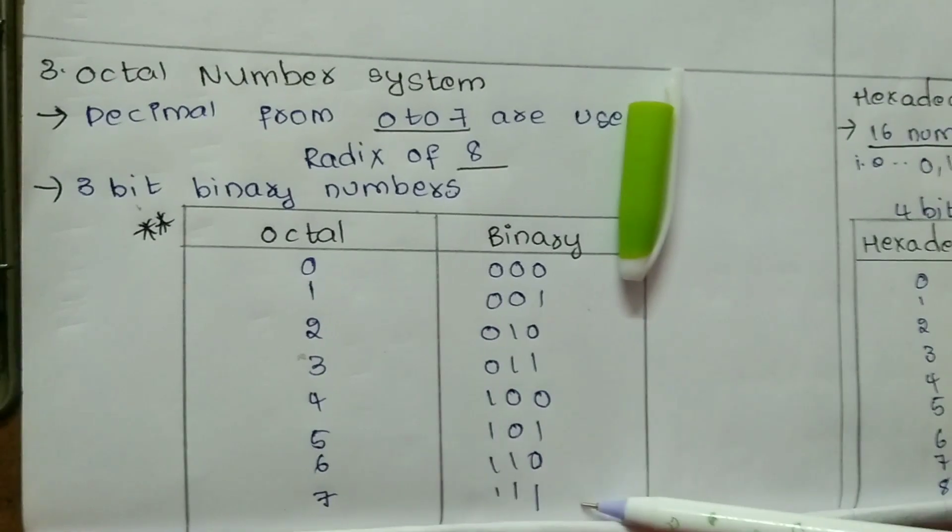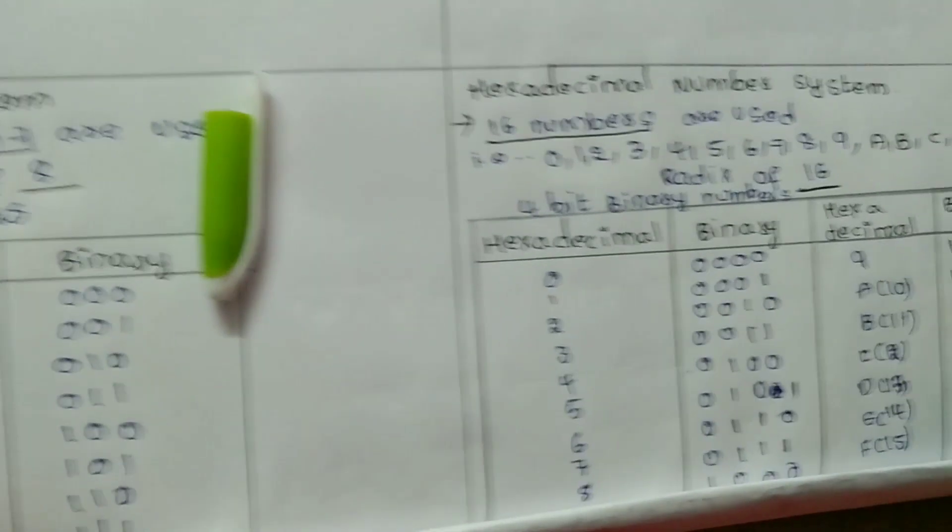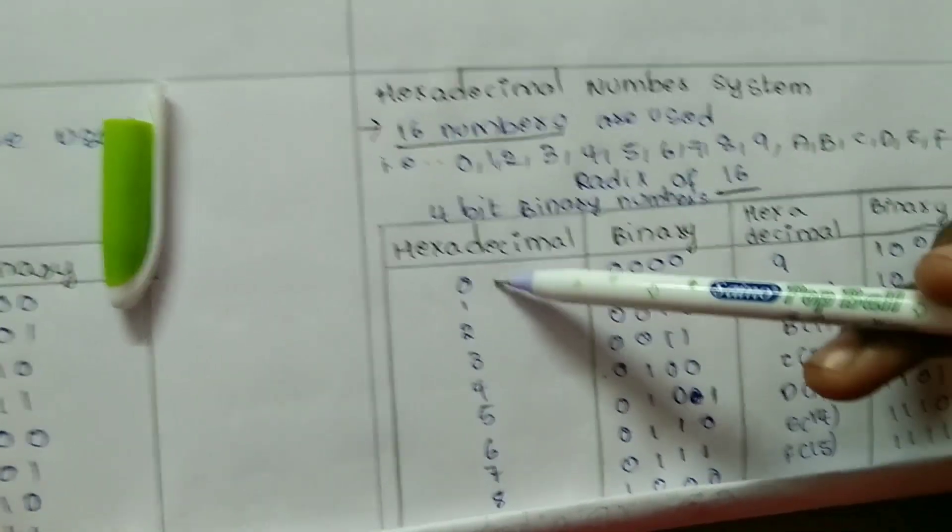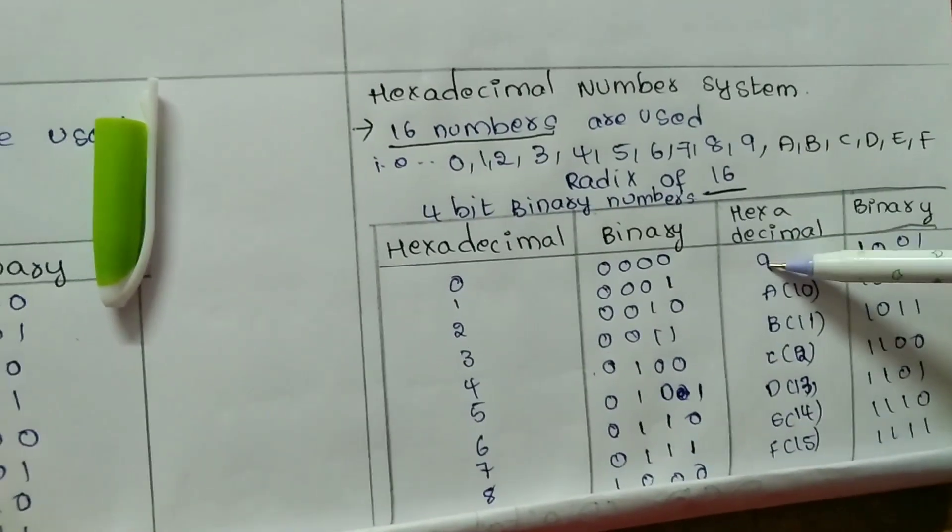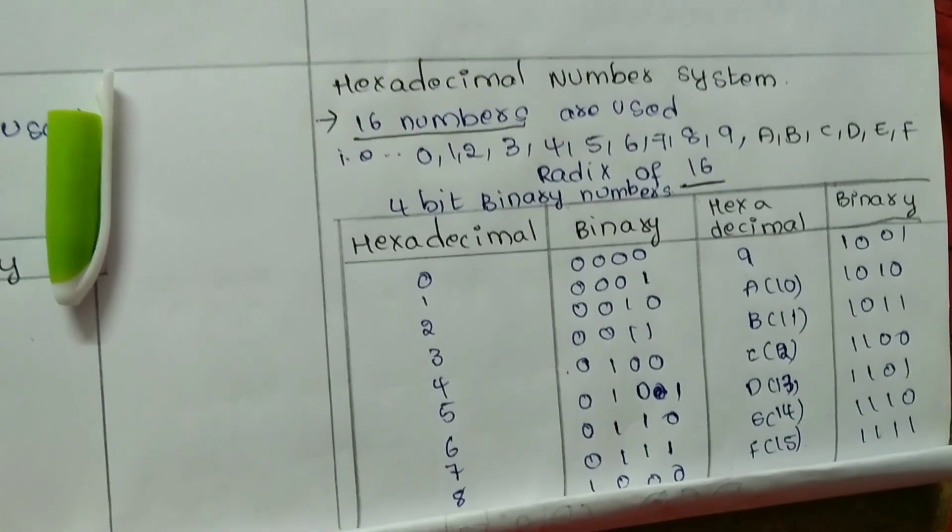0 to 7 is the binary form of 3-bit binary numbers. This is the hexadecimal number system in 4-bit binary number. This is 0 to 9 and A to F. Now placing the values on top of the box, this is the number of values.